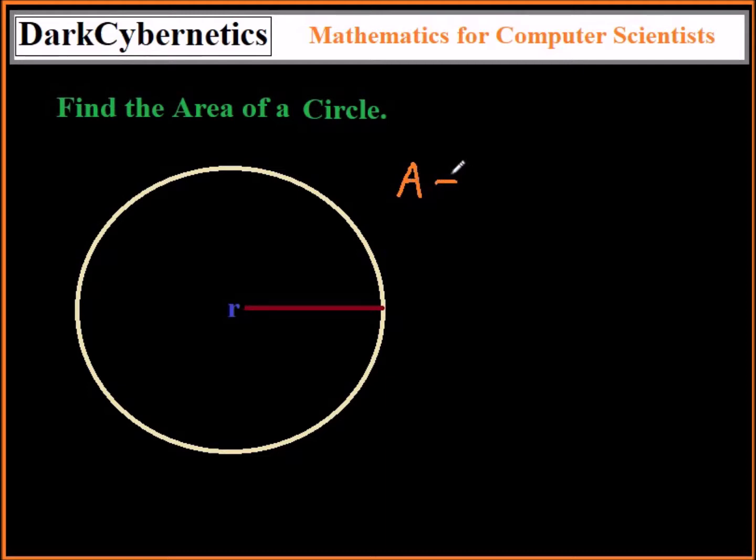We will need the radius. The radius is from the center of the circle to the outermost edge of the circle.